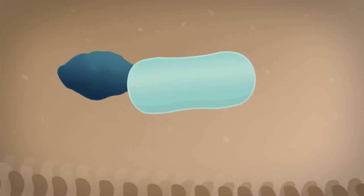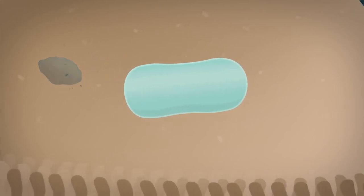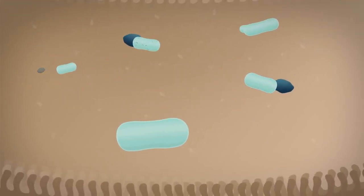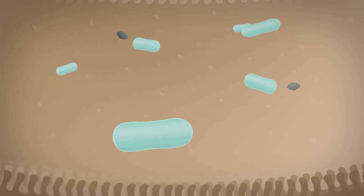Here the spores germinate in response to moisture and nutrients, starting life as beneficial vegetative cells in the chicken's gut.